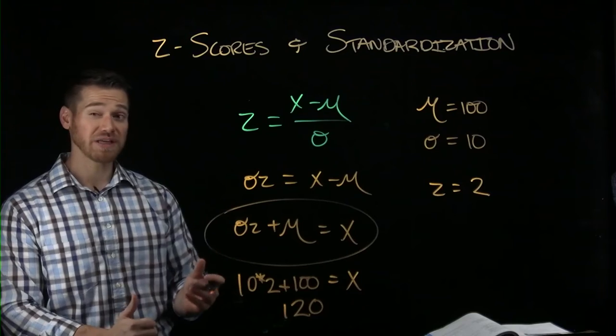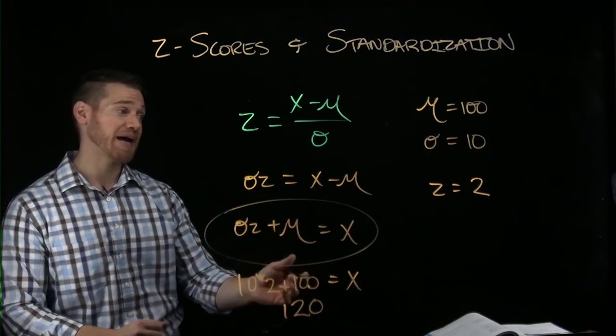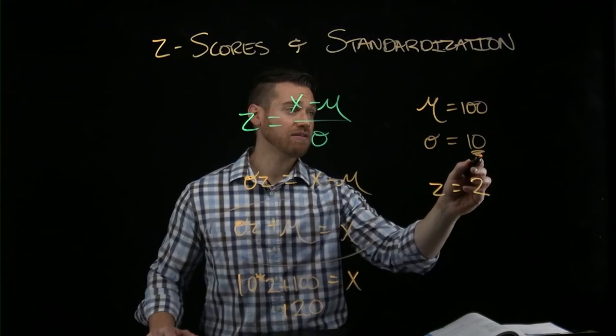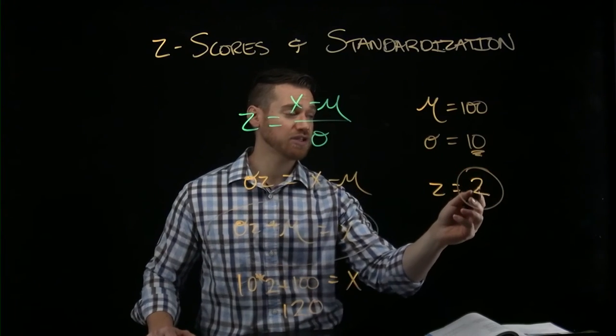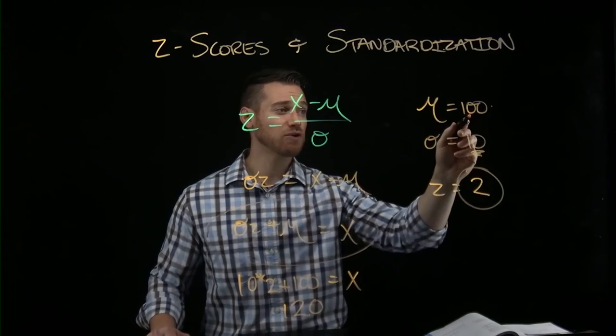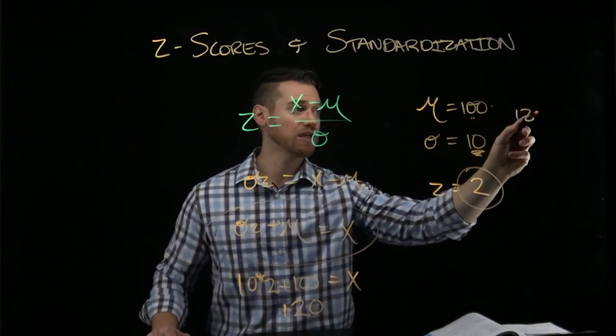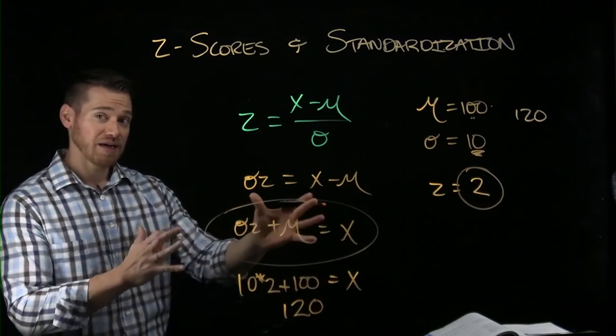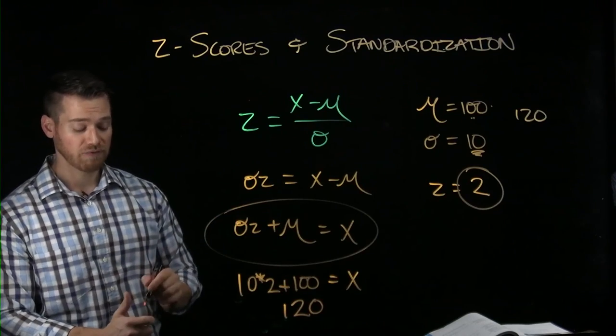And so you can also see without doing that math that if one standard deviation is 10 and we are two standard deviations above the mean, well, we just have to go 20 up from here, which is 120. And this is how we can get an x score from a z.